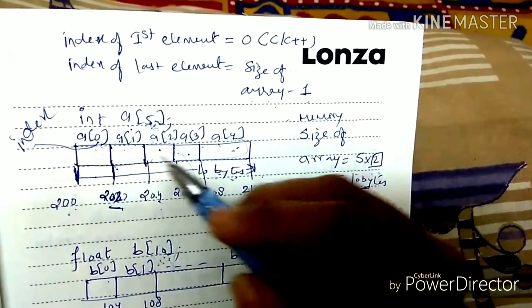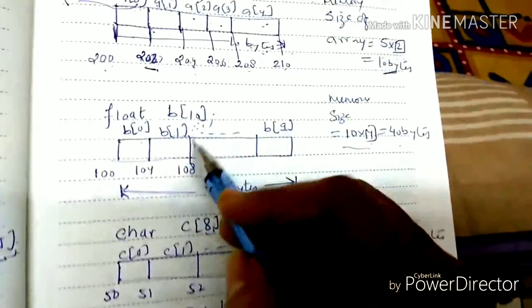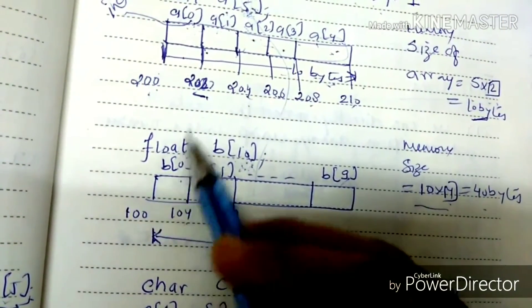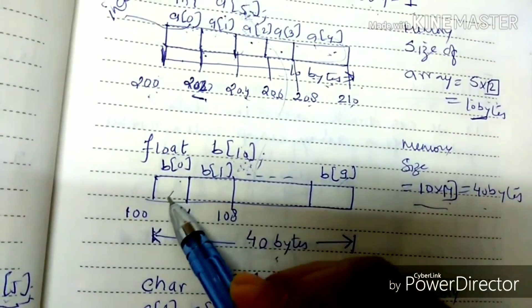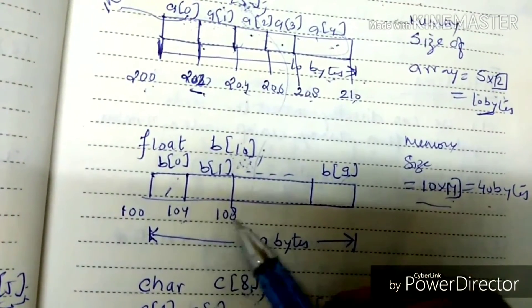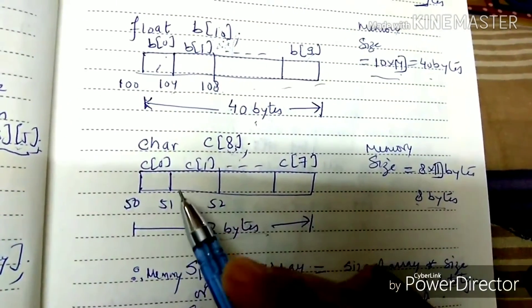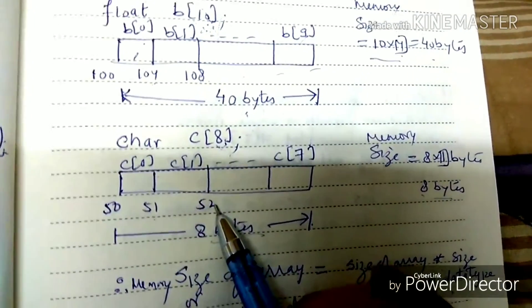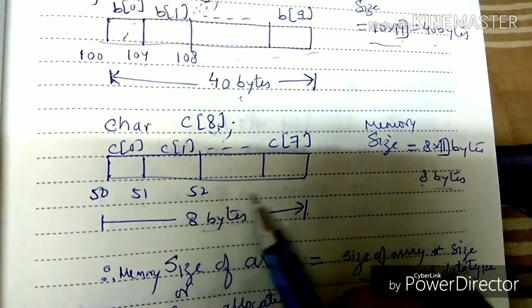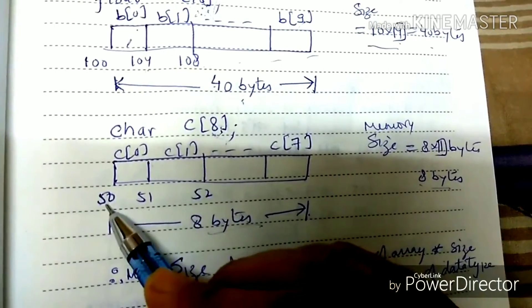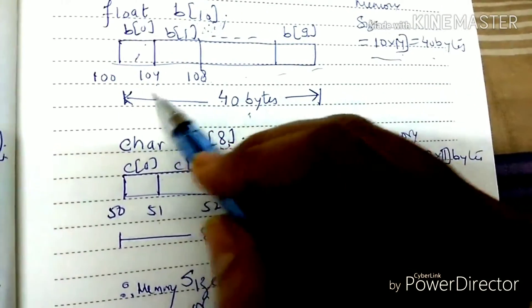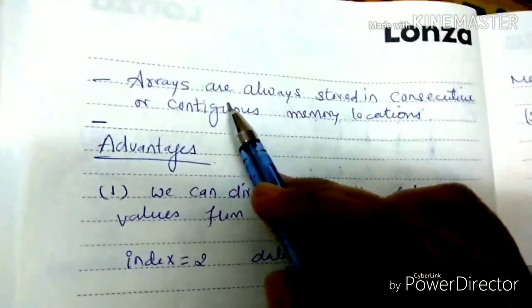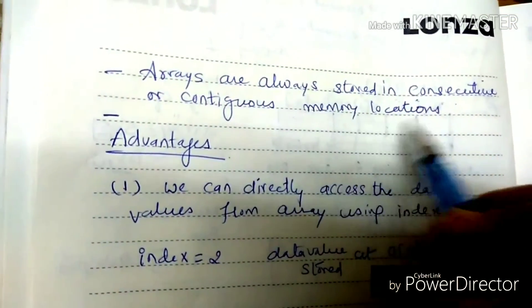For a float array with 10 elements, if the first element is at memory 100, the next will be at 104, then 108, because the difference of 1 float element is 4 bytes. For characters, 1 byte per element, so addresses are 50, 51, 52, and so on. It will not be that one is at 50 and another at 70 — arrays are always stored in consecutive or contiguous memory allocation.